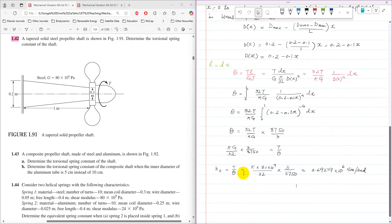So then T over theta is KT, which is torsional spring stiffness of tapered shaft. So by substituting the value of G, which is given as 80 times 10 to the power 9 pascal,